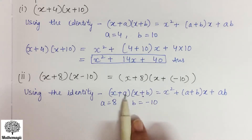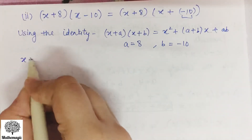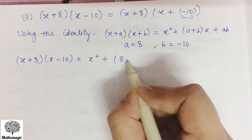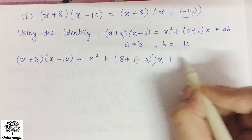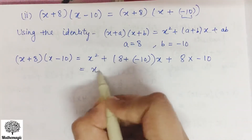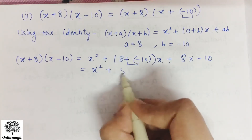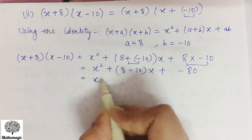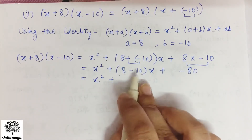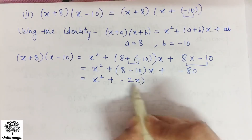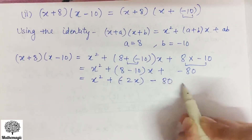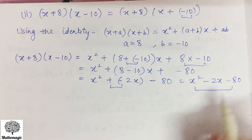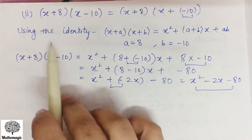Using the identity with a = 8 and b = -10: (x+8)(x-10) = x² + (8 + (-10))x + 8×(-10) = x² + (8-10)x + (-80). Since 10 is greater and carries the minus sign, 8-10 = -2. So this becomes x² - 2x - 80. This is the required product for the second part.